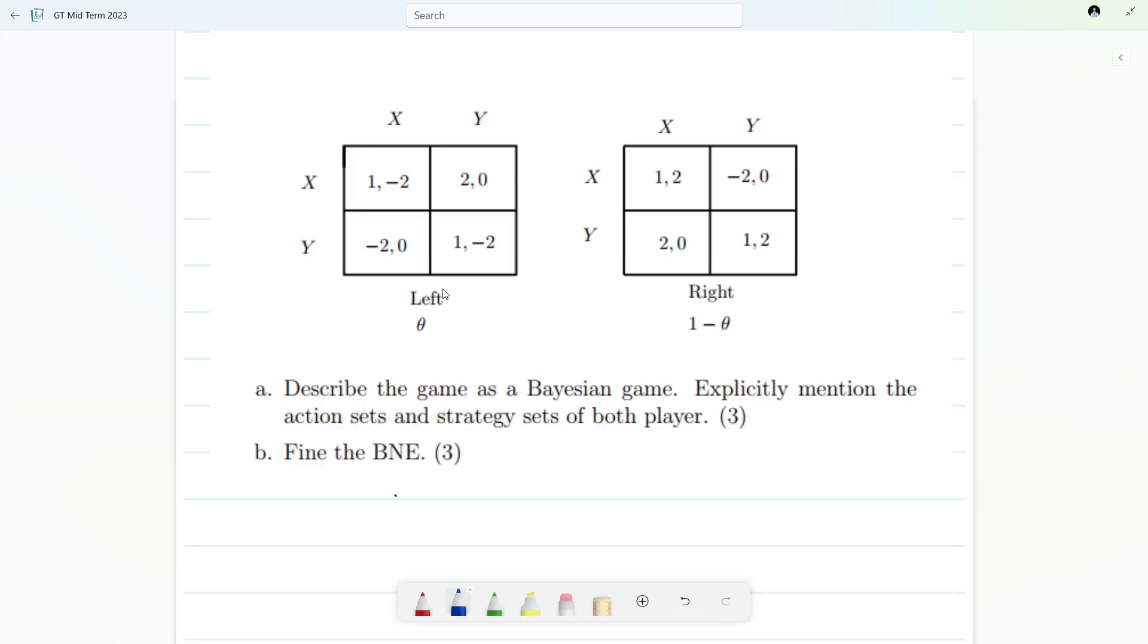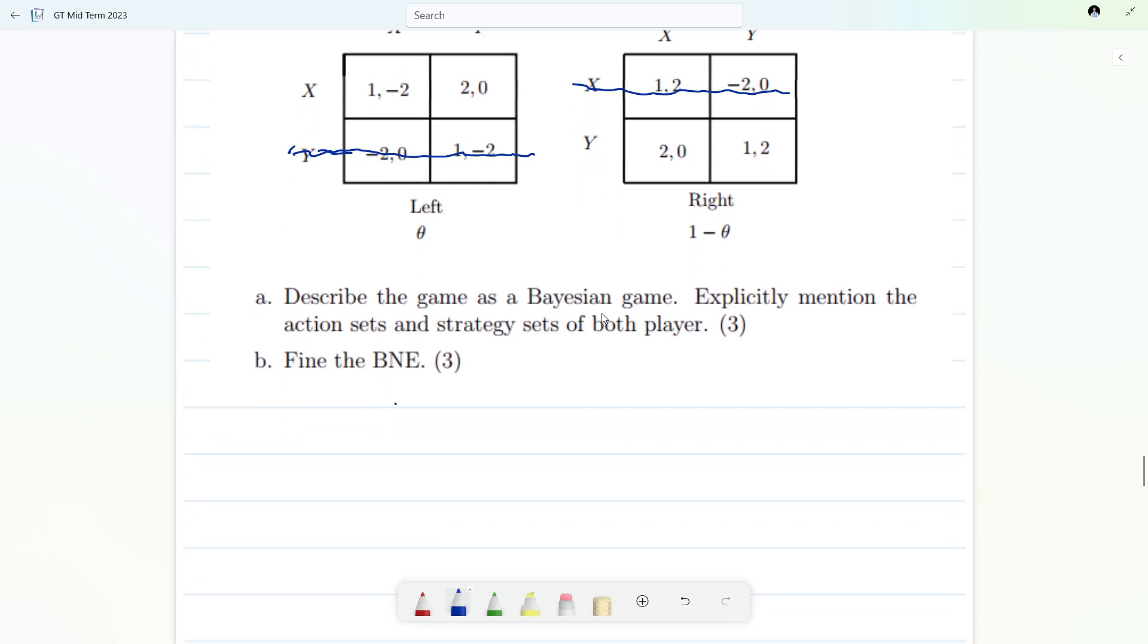Player one knows his type. Can you observe, whenever player one is of left type he will never play Y? See here he is getting minus two, here one, one, two. So player one will never play this Y whenever he is left type. Similarly, if he is of right type, he will never play X. Now the game has become simpler.